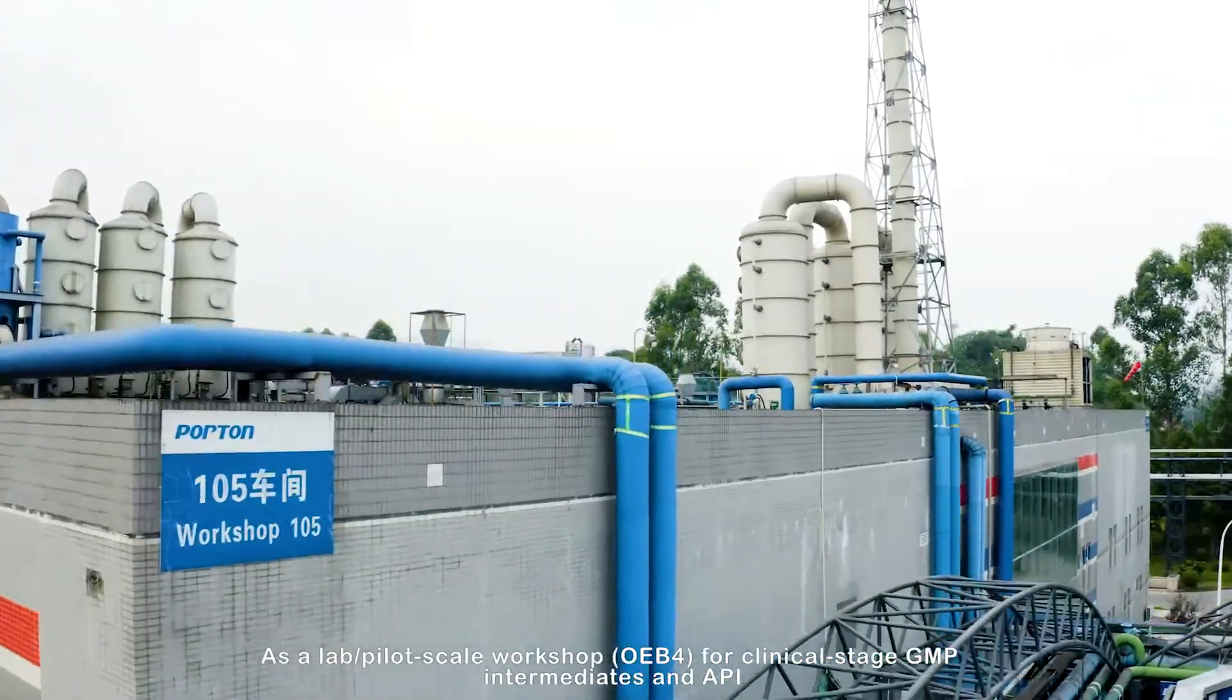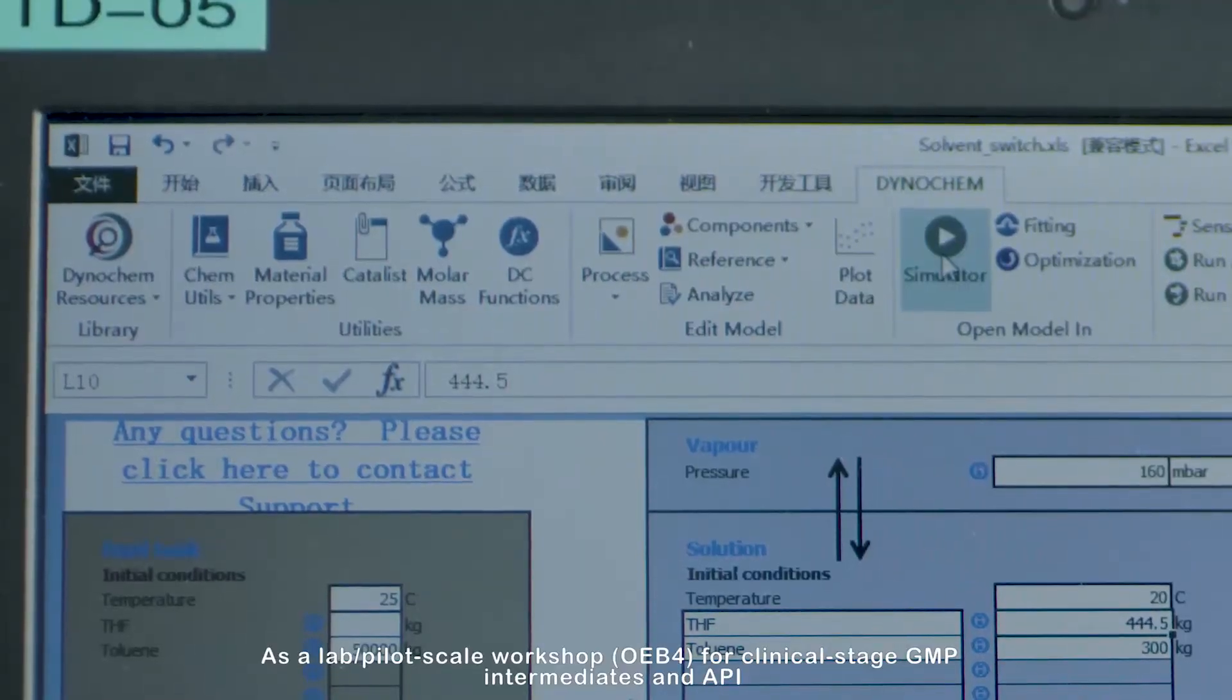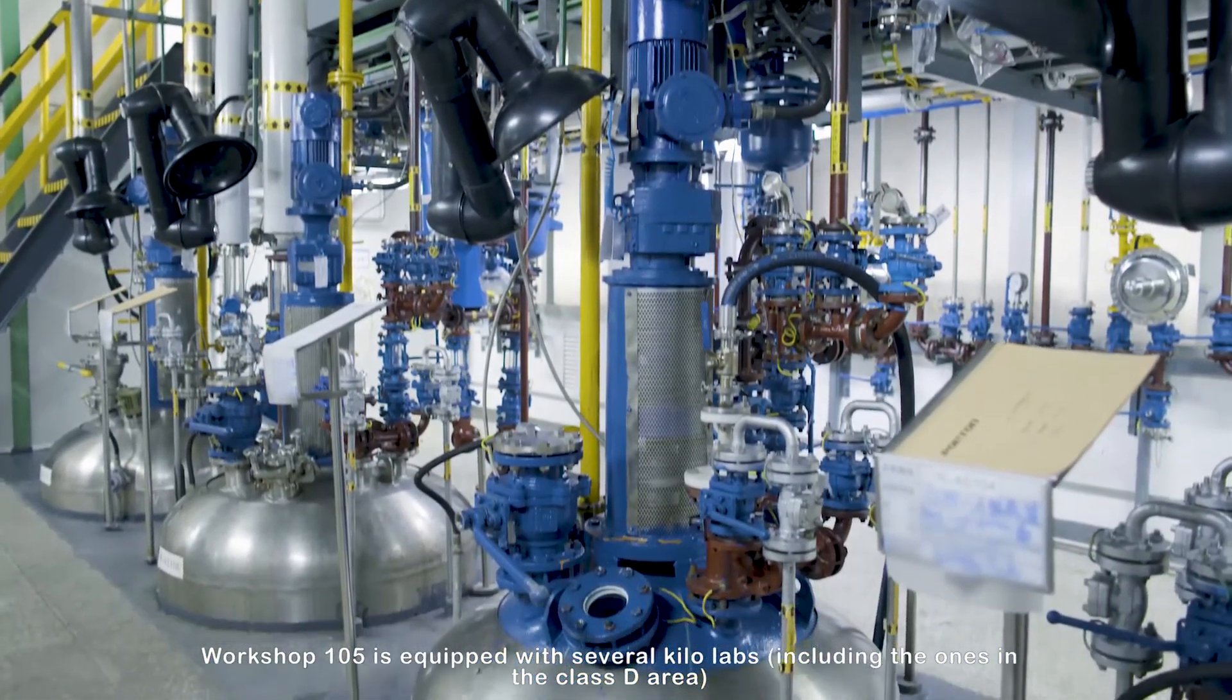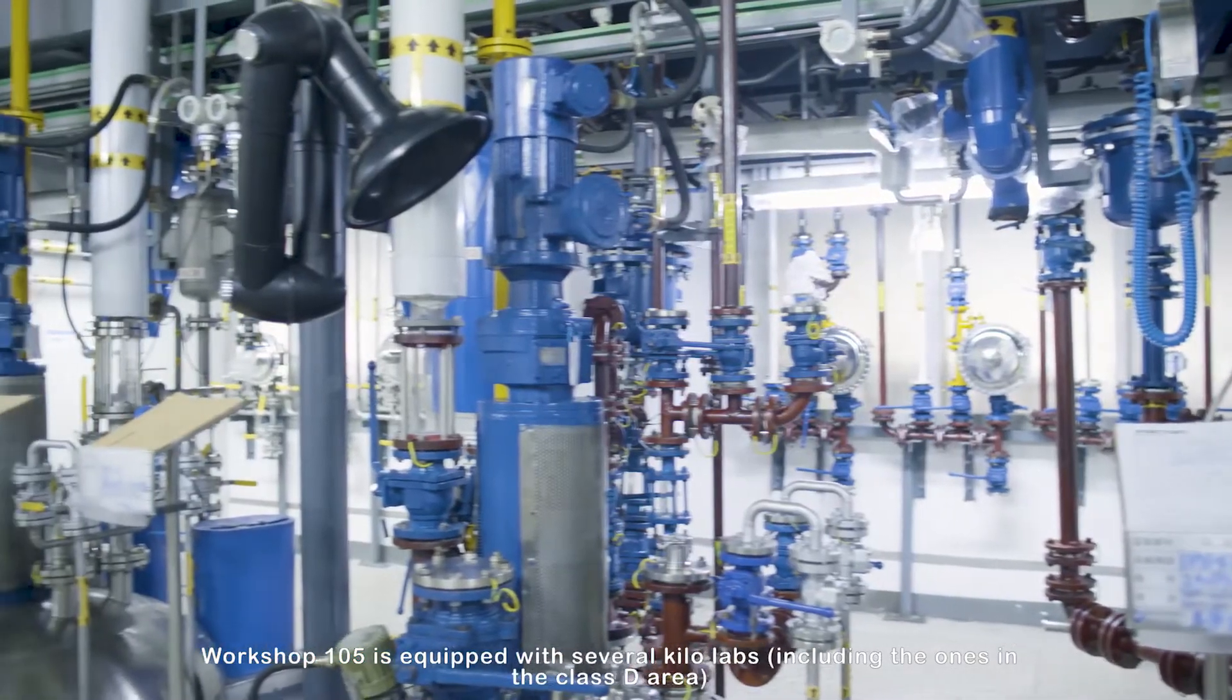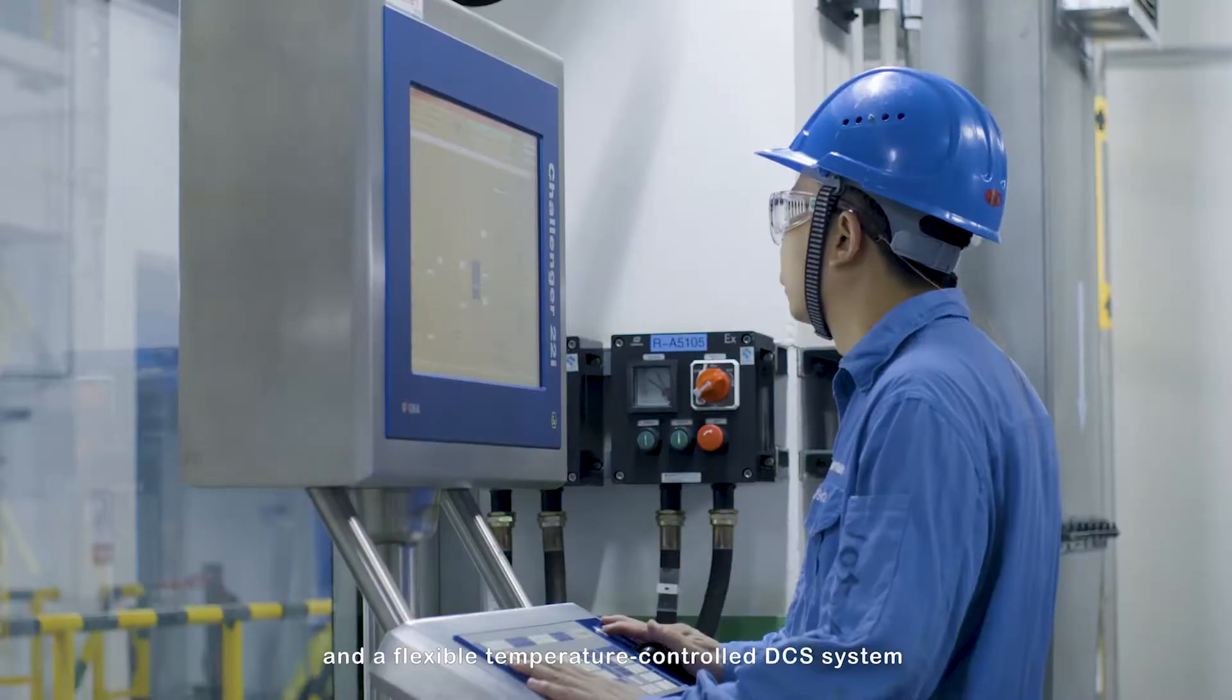As a lab pilot scale workshop OEB4 for clinical-stage GMP intermediates and API, Workshop 105 is equipped with several kilo labs including the ones in the Class D area and a flexible-temperature-controlled DCS system.